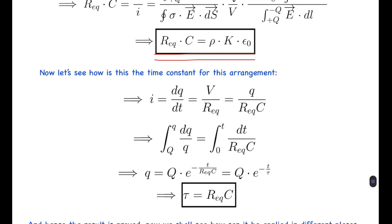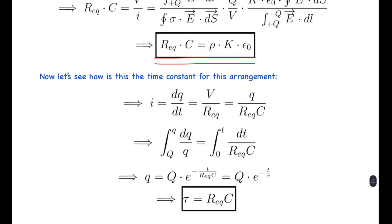Now let's prove that this is actually the time constant of the system. We know that current I = dq/dt, which can also be written as V/R_eq = q/(C × R_eq). Separating variables and integrating, we get that the charge at any time t is q(t) = Q₀ × e^(−t / R_eq C), where Q₀ is the initial charge. This is a familiar exponential decay format, also seen in nuclear decay.